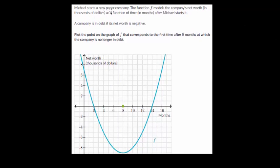Michael starts a new paper company. The function f models the company's net worth, again in thousands of dollars, as a function of time in months after Michael starts it. This is very similar to the last question. A company is in debt if its net worth is negative. So let's look at the graph here.